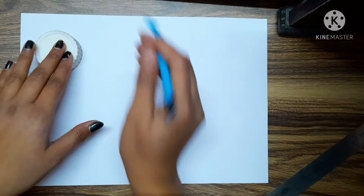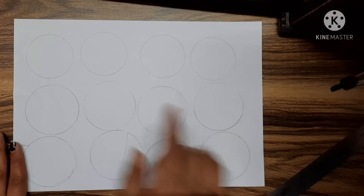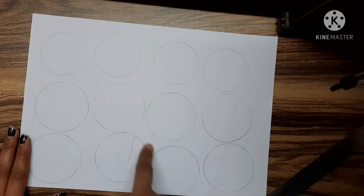First we are going to draw the traffic lights. Take any circular object, take a pencil and make 12 circles of the same size. Now color the first four circles with red, next four circles with yellow, and the next four circles with green color. Your parents will help you in cutting out the circles.